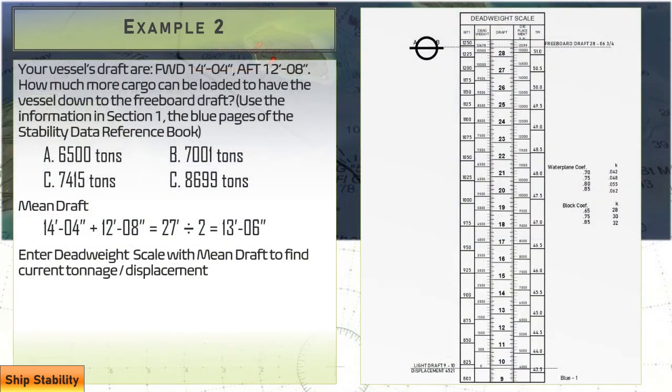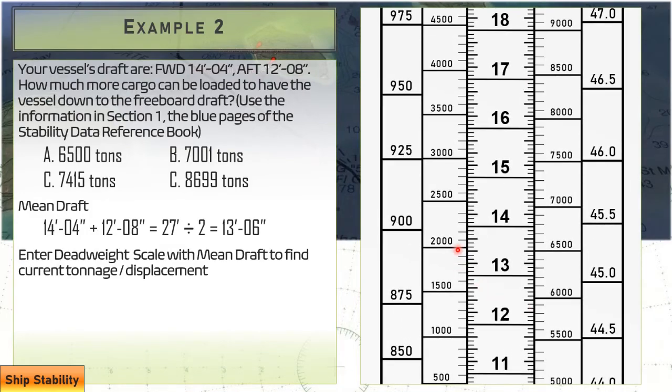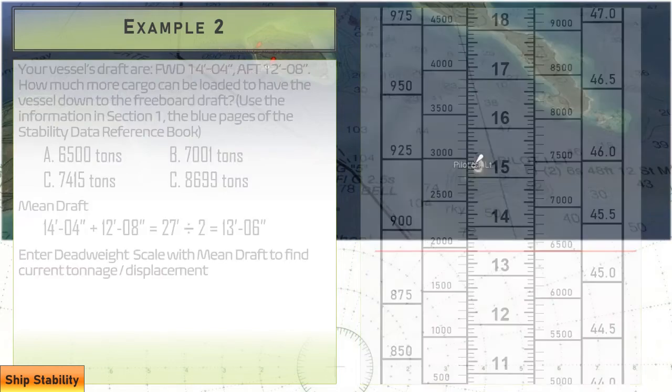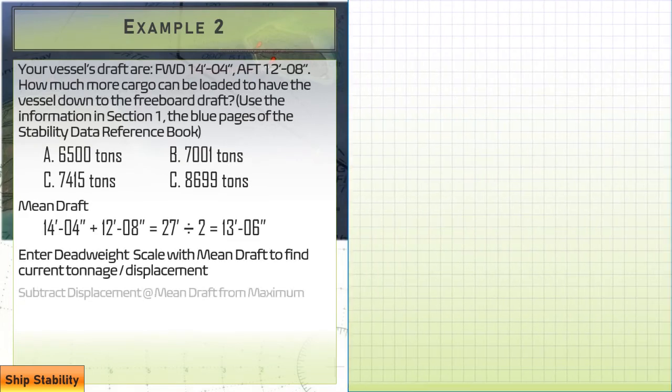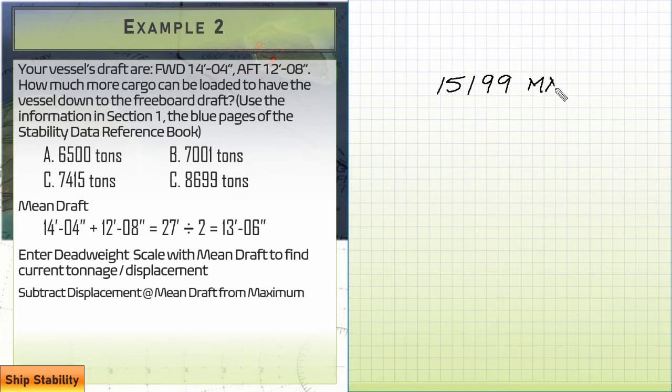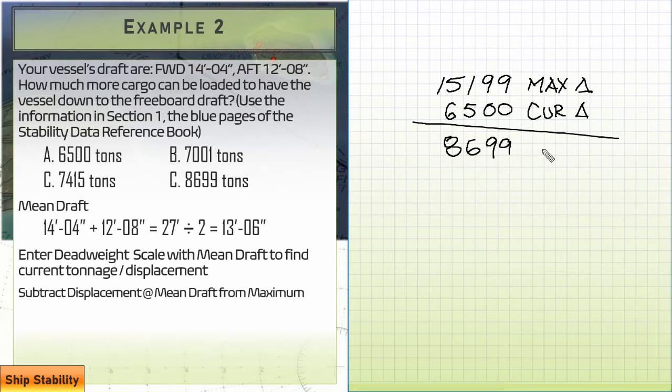Once we have our average draft here, we're going to take it to our deadweight scale and plug it in. So we have 13'-6", 13 and a half. That's going to be this mark right here. And we draw that in and we get a nice convenient round number this time. That's going to be awesome. It makes our math a lot easier. So we have 6,500 and we're going to be using our maximum draft again. So we've got 15,199. The max is going to be the same for each and every one of these lovely questions. We're going to subtract our current displacement, 6,500. We get 8,699 tons. That's going to be our answer for this one, option C.